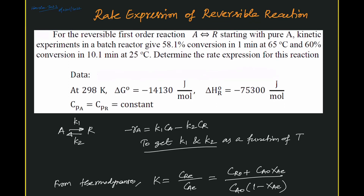This problem is about getting the rate expression of a reversible reaction. For the reversible first order reaction A giving rise to R and R giving rise to A, starting with pure A, kinetic experiments in a batch reactor give 58.1% conversion in 1 minute at 65°C and 60% conversion in 10.1 minutes at 25°C. We are given delta G data at 298 K, delta H data at 298 K, and the Cp of the feed and product as constants. Using this data, we need to determine the rate expression for the reaction.